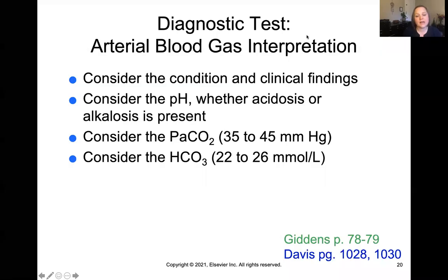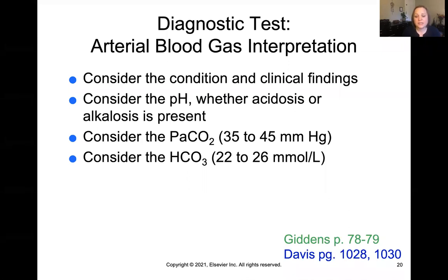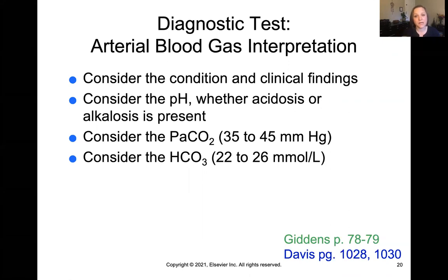When you get that arterial blood gas lab result, there are a couple of things you're going to see on there. You'll see the pH of the blood, the PaCO2 — that's the arterial carbon dioxide level — and you're also going to see the bicarb, the HCO3. These are definitely numbers you need to memorize. You need to know that pH normal is 7.35 to 7.45, and you'll need to know the levels for carbon dioxide and bicarbonate as well.